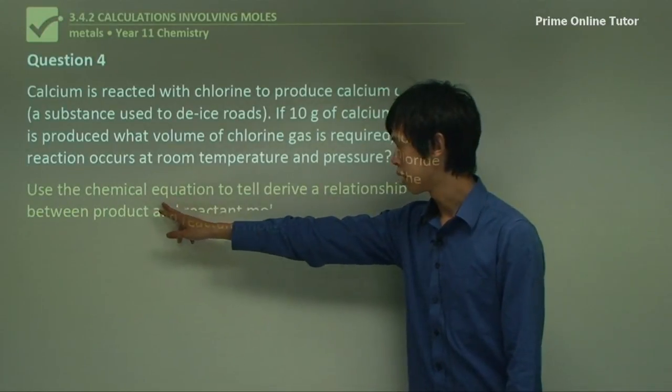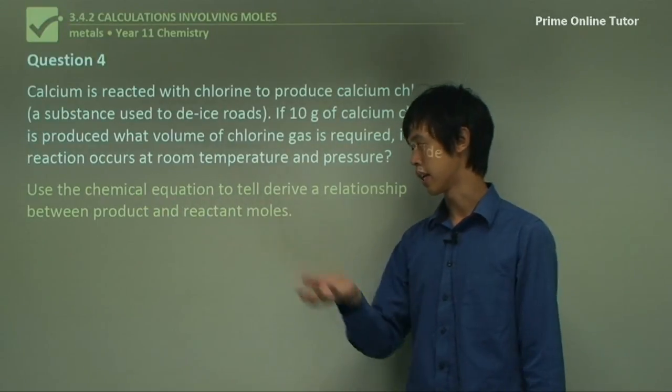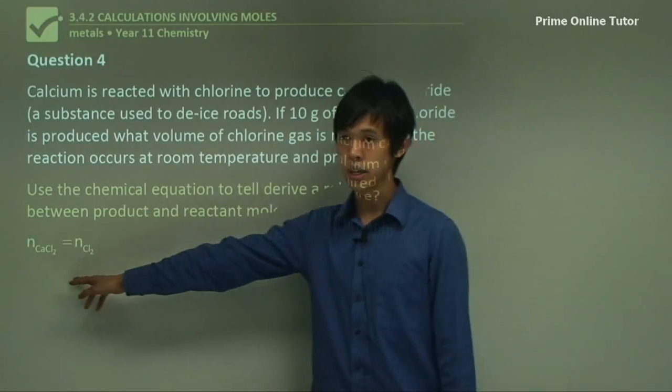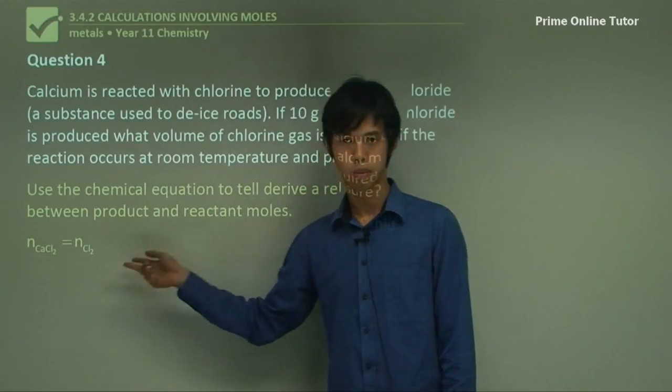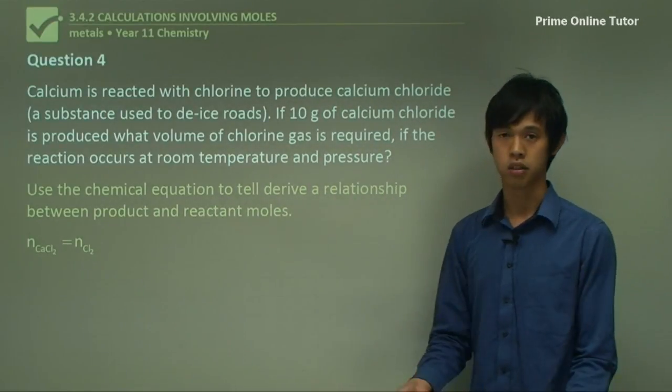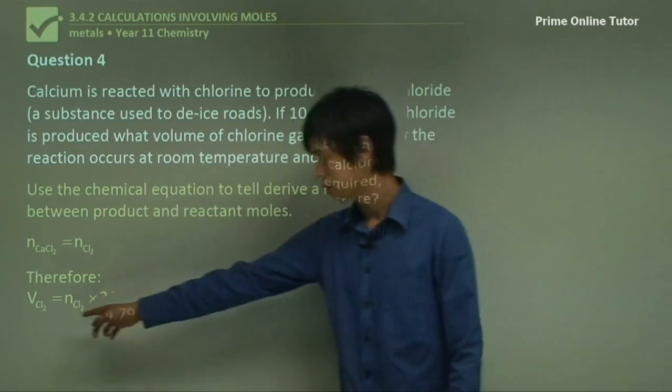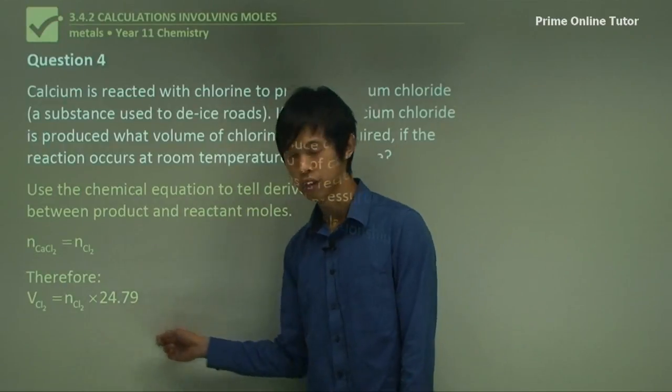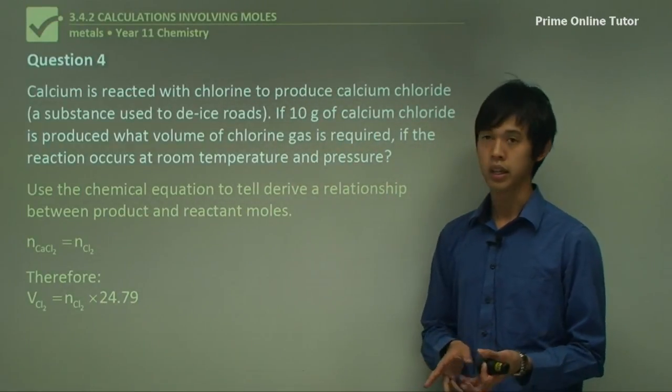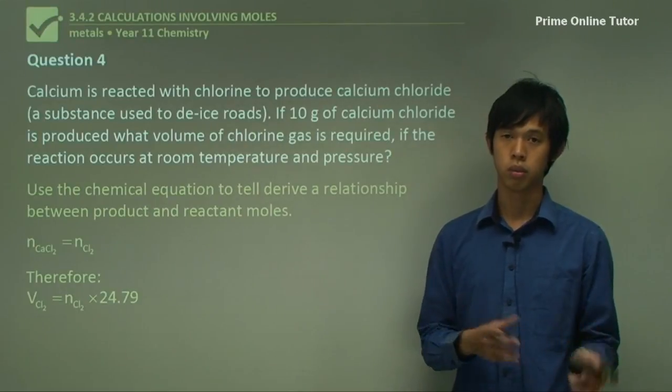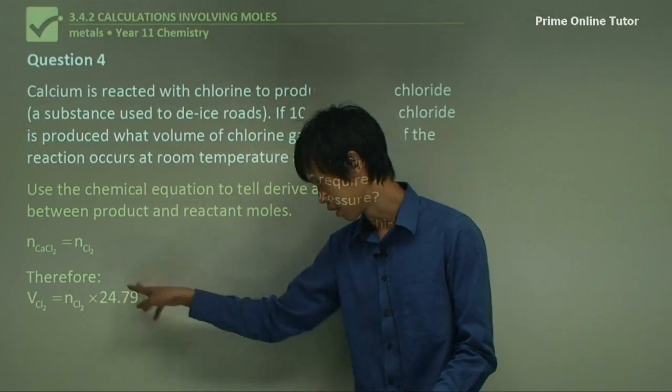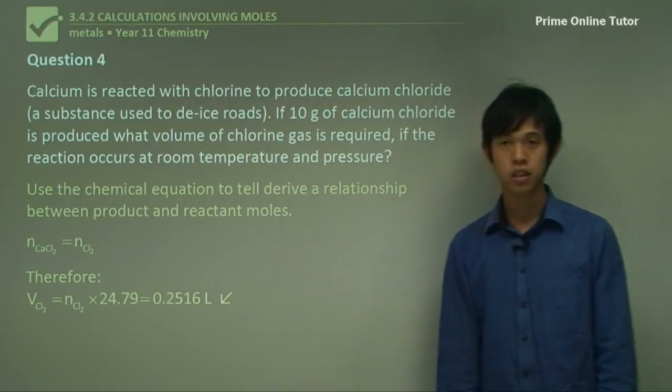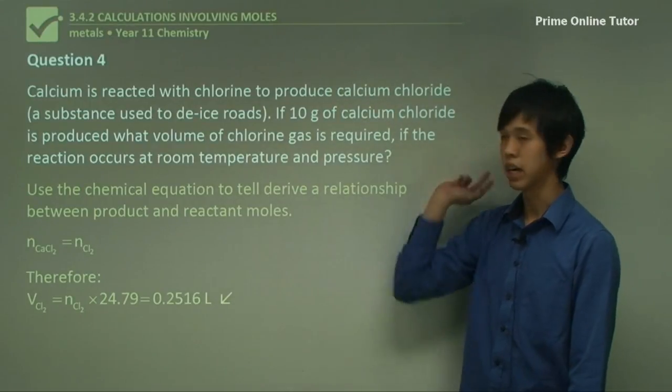Then we use the chemical equation to derive a relationship between product and reactant moles. If you look at the chemical equation, we'll see that the number of moles of CaCl₂ equals the number of moles of Cl₂. Then we know that the volume of Cl₂ is just equal to the number of moles of Cl₂ times the volume that one mole of an ideal gas takes up at standard temperature and pressure, which is about room temperature and pressure. So we'll just use this number. And then if you do the multiplication, you get 0.2516 liters is what you needed to make this reaction happen.